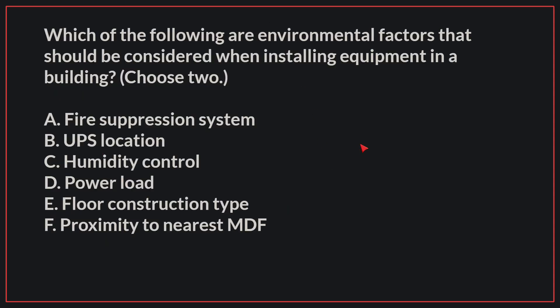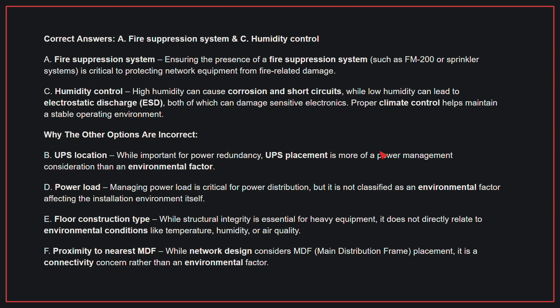Which of the following are environmental factors that should be considered when installing equipment in a building? Choose two. The correct answers are A, fire suppression system, and C, humidity control. Ensuring the presence of a fire suppression system is critical to protecting network equipment from fire-related damage. High humidity can cause corrosion and short circuits, while low humidity can lead to electrostatic discharge, both of which can damage sensitive electronics. Proper climate control helps maintain a stable operating environment.